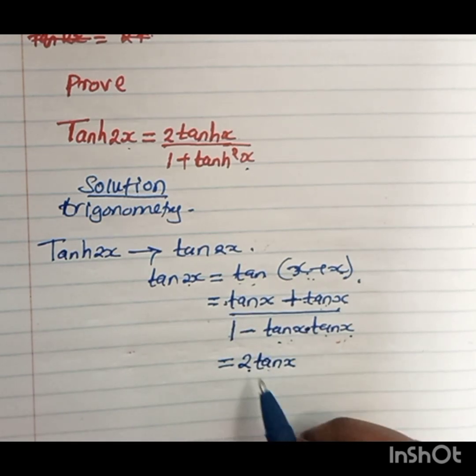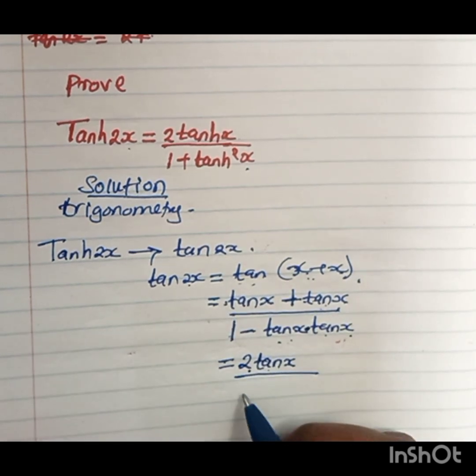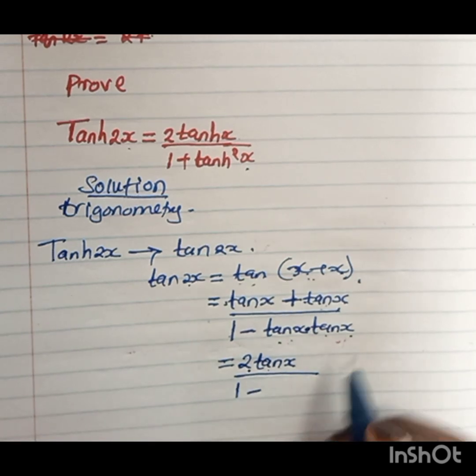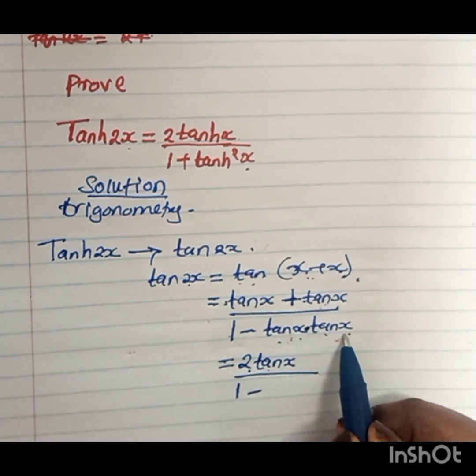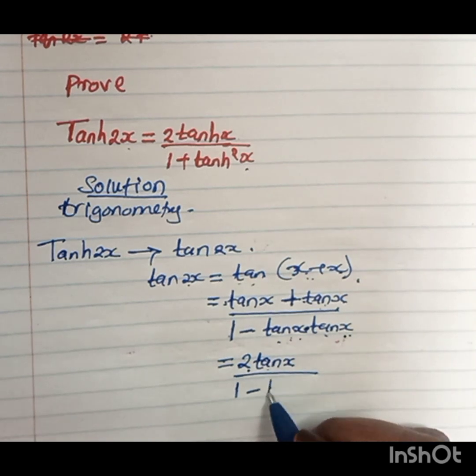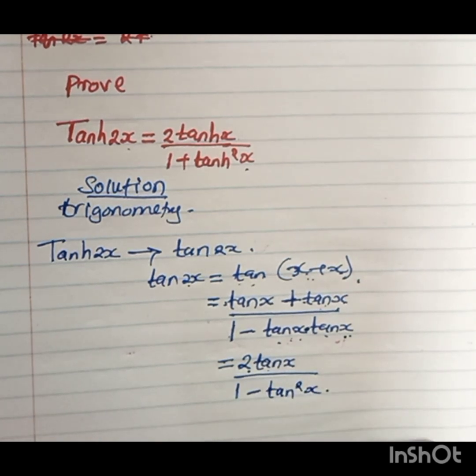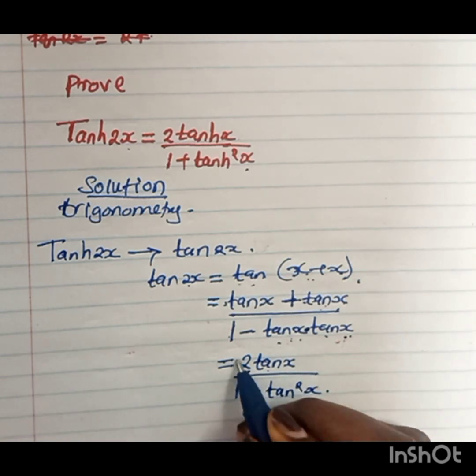Then divide by 1 minus tan x times tan x, which is tan squared x. So we have tan squared x. That's what we have in trigonometry.